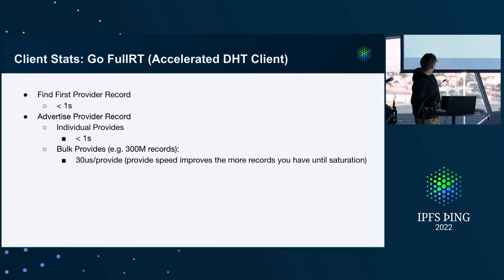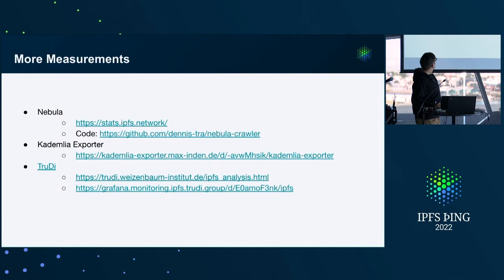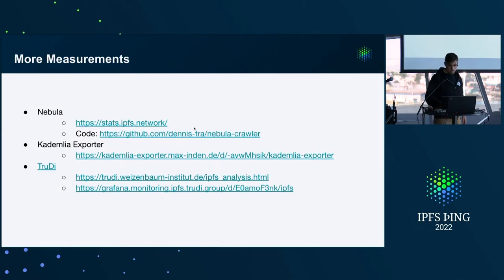If you use the accelerated DHT client, everything goes a lot faster once it's bootstrapped, because you only have to make a request to one peer — you don't have to do hops. And provides are a lot faster too if you do a big bulk of provides, because you already know exactly who to provide those records to.